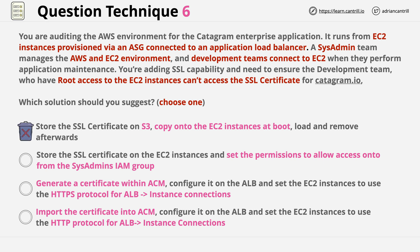So the top answer is eliminated as invalid. With the second answer, even if you could set operating system level permissions to only allow an IAM group access, any user with root permissions can remove this restriction. And for the record, you can't do this anyway — permissions in Linux are POSIX-based permissions, internal to that instance or file system. You can't set IAM users or groups on POSIX permissions within a Linux operating system, at least not by default.